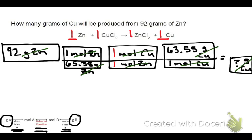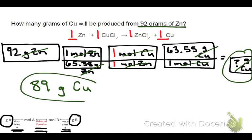And it looks like, rounding to two sig figs, my answer comes out to be about 89. And what are my units? Well, over here, looks like it was grams of copper. So what this tells me is that if I put in 92 grams of zinc, and it completely reacts according to this equation, I should be able to get out 89 grams of copper. And that's it.